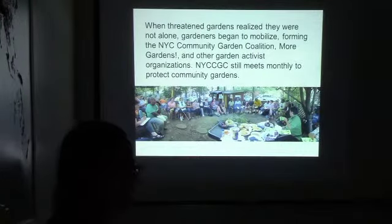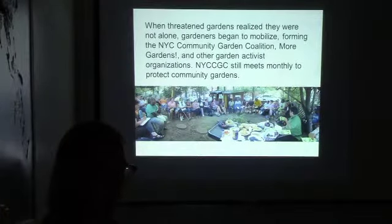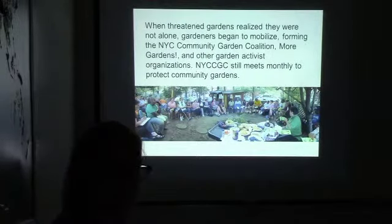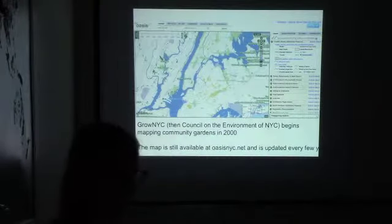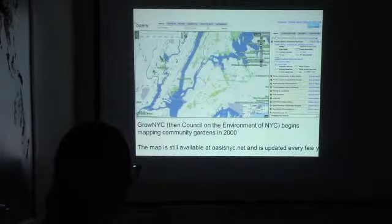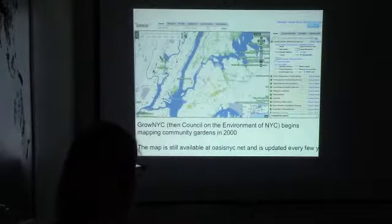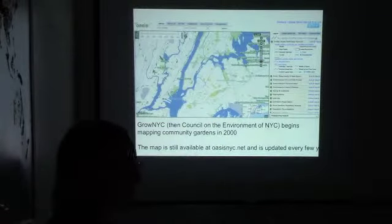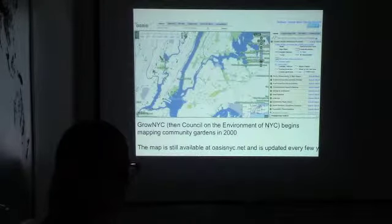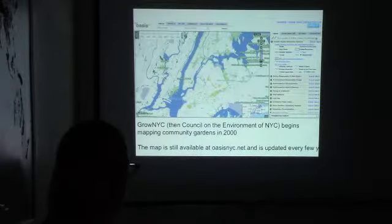The coalition still meets monthly to protect the gardens because still to this day there's no law preserving community gardens. Elliot Spitzer, who was the attorney general at the time for the state, sued the city on behalf of the gardens and won for the most part. This was also the first map made of community gardens — it happened in that moment of crisis. The city has a part of the parks department called Green Thumb that works with community gardens and registers them, but they never had a map before.